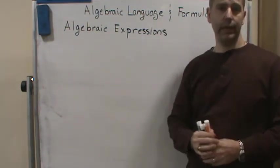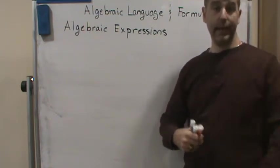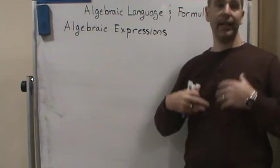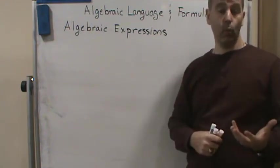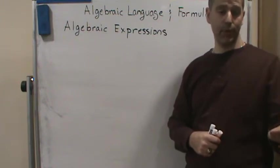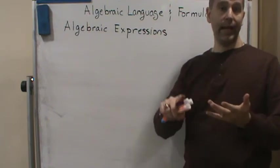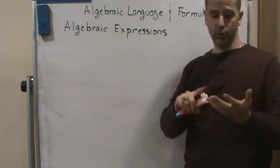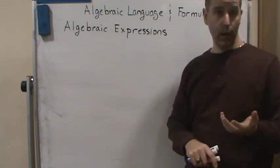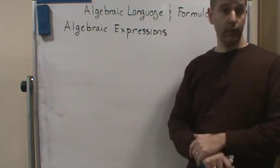An algebraic expression is a combination of letters, variables, and numbers that are connected by one or more of the operations, arithmetic operations. So multiplication, division, adding, subtracting, that would also include exponents as well, square roots, things like that.